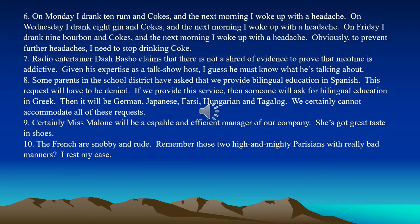Number eight follows the typical slippery slope pattern: Some parents in the school district have asked that we provide bilingual education in Spanish. This request will have to be denied. If we provide this service, then someone will ask for bilingual education in Greek, then German, Japanese, Farsi, Hungarian, and Tagalog. We certainly cannot accommodate all of these requests, so the initial request will have to be denied. If we take that first step, it opens the door to a disastrous outcome. The reason this is a fallacy is that providing bilingual Spanish education is unlikely to cause that causal chain.